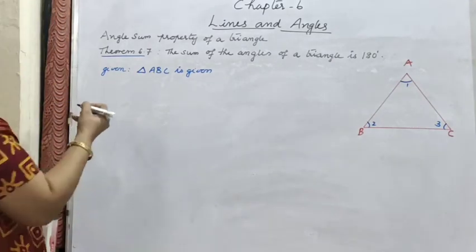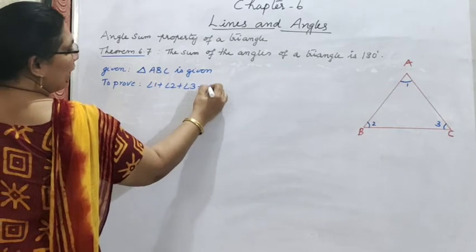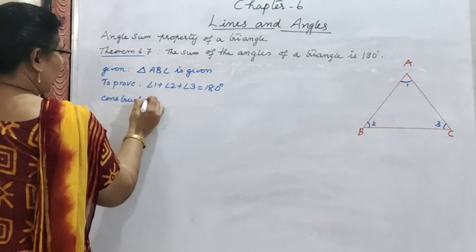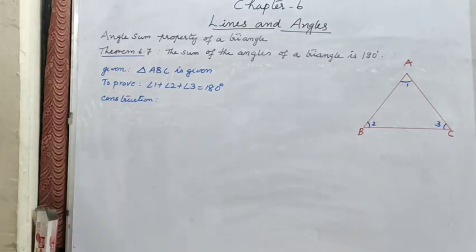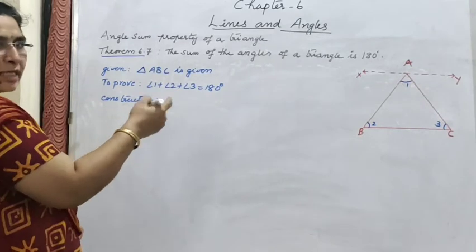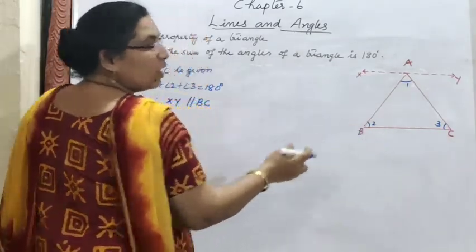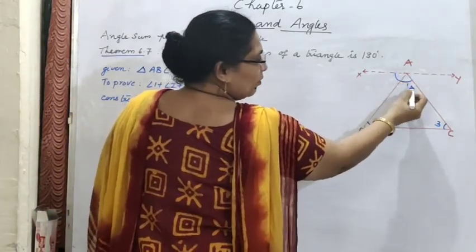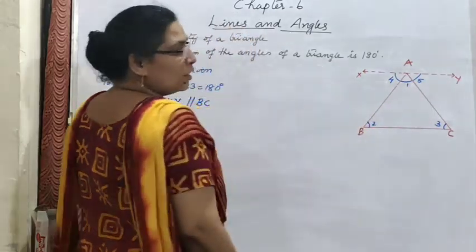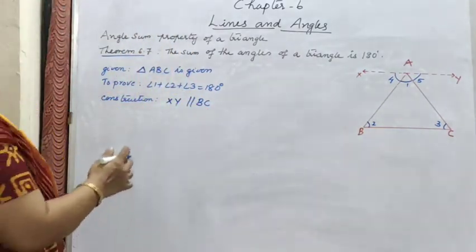Construction: draw a line XY parallel to BC at vertex A. After drawing XY parallel to BC, at point A we now have three angles — labelled 4, 1, and 5 — forming a straight angle. So angle 4 plus angle 1 plus angle 5 equal to 180°.